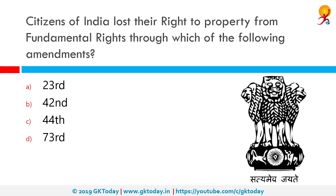Citizens of India lost their right to property from the fundamental rights through which of the following amendments? The correct answer is the 44th Amendment. The 44th Amendment seeks to protect the people of India from such injustices as the Zamindari system, which is why the right to property was removed.